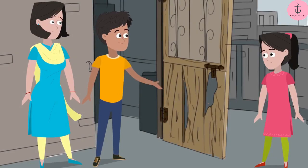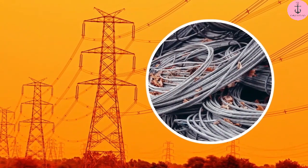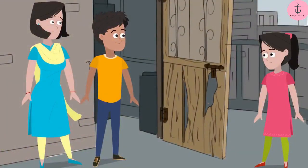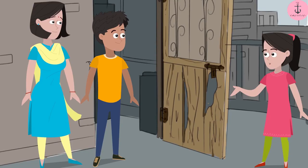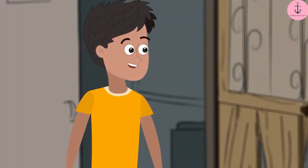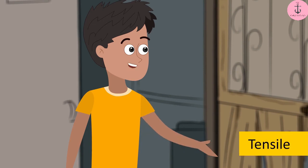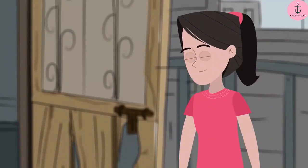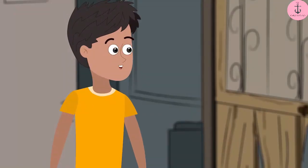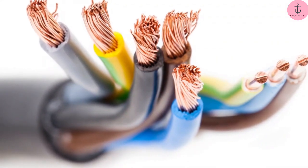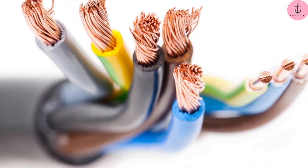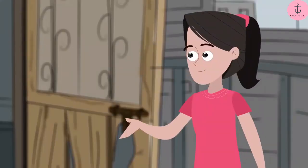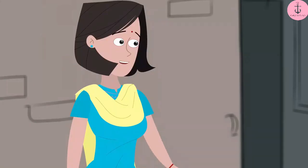Sanya, do you know that utilizing this property, wires are made using metals? Wires? Making of wires also involves utilizing a property of metals? Yes, wires are made utilizing the tensile property of metals. Can you tell me why there is a rubber-like coating outside the wires? I guess so that we don't get hurt when the current passes through the wires. This rubber stops the electrical current from entering our body. Am I right, mummy? Absolutely, Sanya.